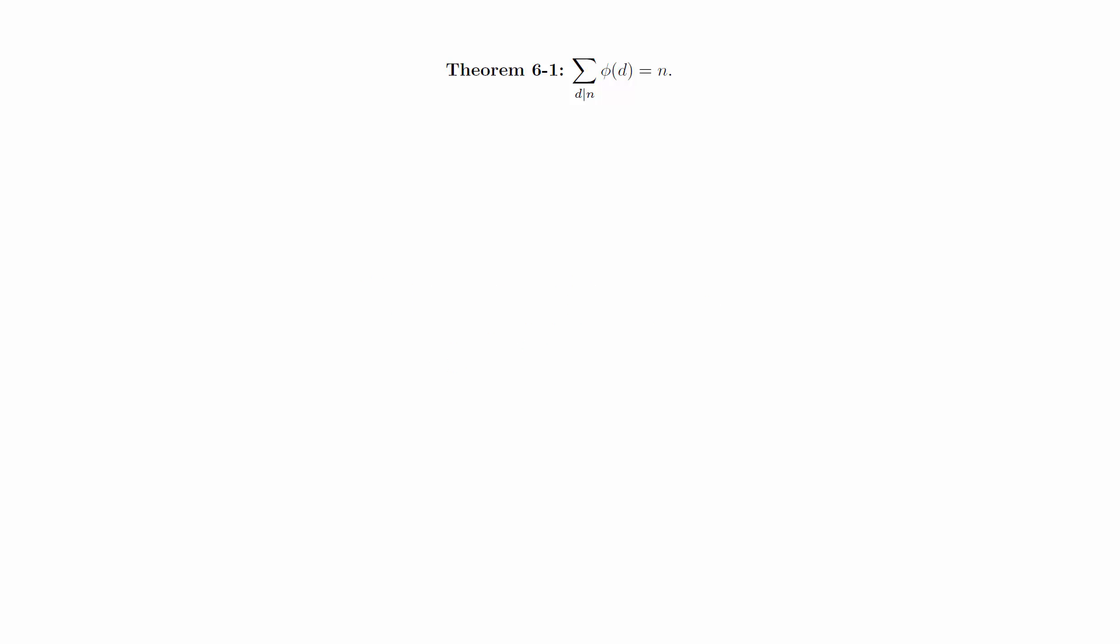We will use a combinatorial argument to prove this in general. Let S of n denote the set of natural numbers from 1 to n. For each element k of S of n, we're going to write down the GCD of k and n.